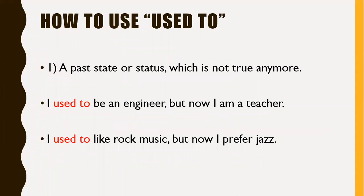How to use 'used to'? Number one: it expresses a past state or status which is not true anymore. For example: I used to be an engineer, but now I am a teacher; I used to like rock music, but now I prefer jazz. This is to contrast something that you did or liked in the past versus something that you do now. This is rule number one for 'used to'.